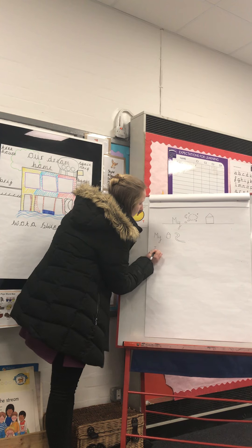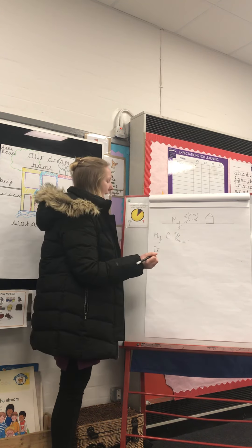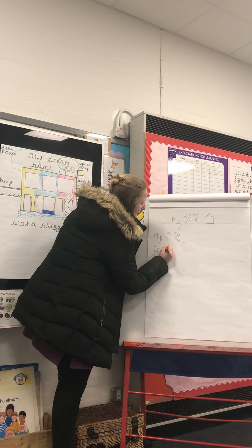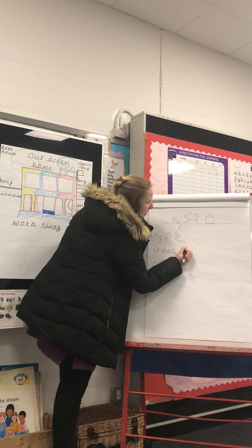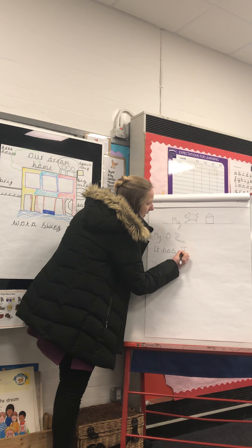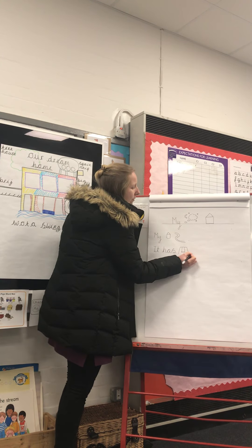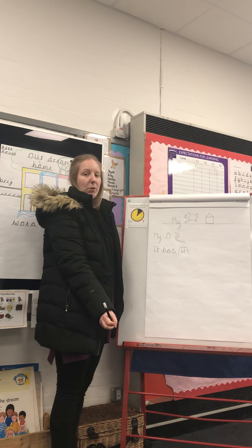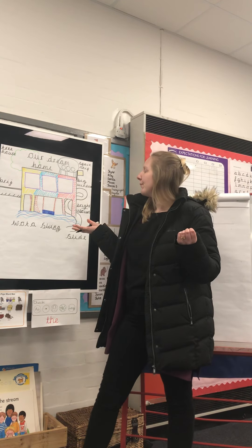So my next sentence is going to be: 'It has a swing.' Has a swing — so let's draw our swing there. There we go, and then remember I'm going to put my full stop at the end to remind me that I will need to put one there when I'm writing my sentence.